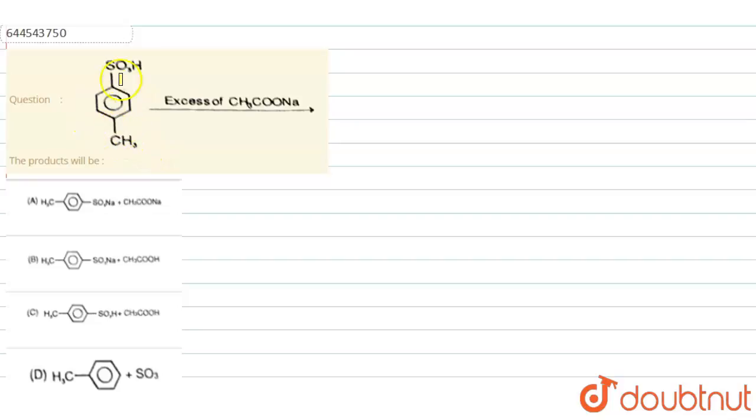Here, 4-methyl sulfonic acid is allowed to react with excess of sodium acetate. And for this reaction, we are given four options. Now our job is to find out which product is formed.